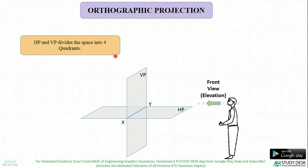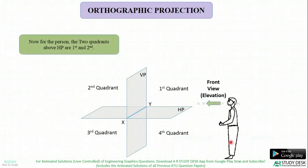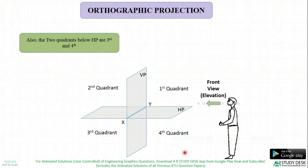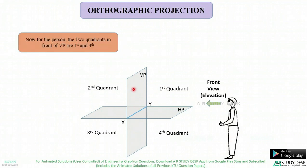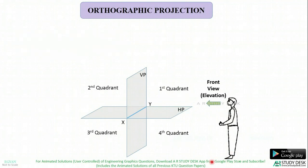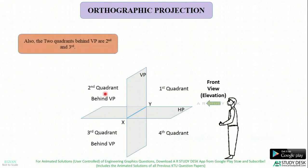This space is divided by these 2 reference planes into 4 quadrants: 1st quadrant, 2nd quadrant, 3rd quadrant, and 4th quadrant. For this person, the 2 quadrants which are above HP are 1 and 2. The 2 quadrants which are below HP are 3 and 4. The vertical plane VP divides space so that quadrants 2 and 3 are behind VP, and quadrants 1 and 4 are in front of VP.